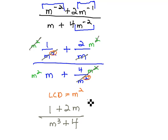From here, we could try and factor. This one does not factor, and so we have our final solution of 1 plus 2m over m cubed plus 4.